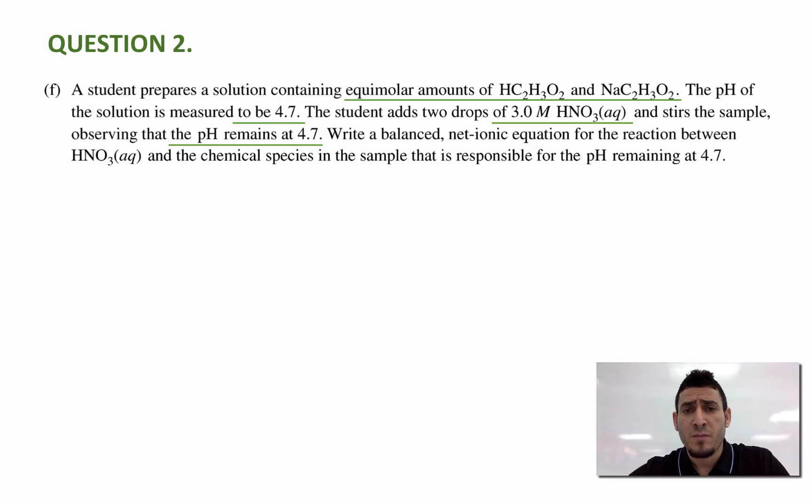observing that the pH remains at 4.7. Write a balanced net ionic equation for the reaction between nitric acid and the chemical species in the sample that is responsible for the pH remaining at 4.7.